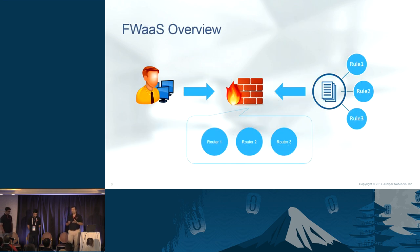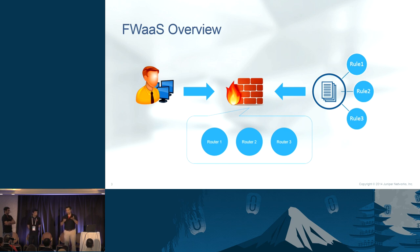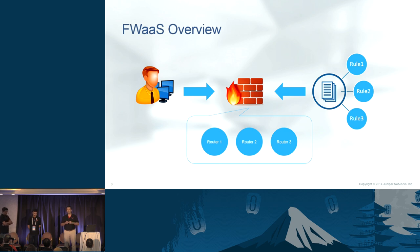How does Firewall as a Service work in an OpenStack environment? As a tenant, you create firewall rules and policies, create a firewall instance, and associate it to one or more routers. The moment you associate a firewall to a router, the IP table rules are configured on the network node and your traffic flow is monitored and secured.